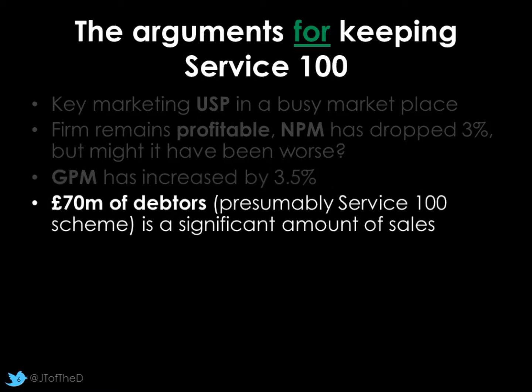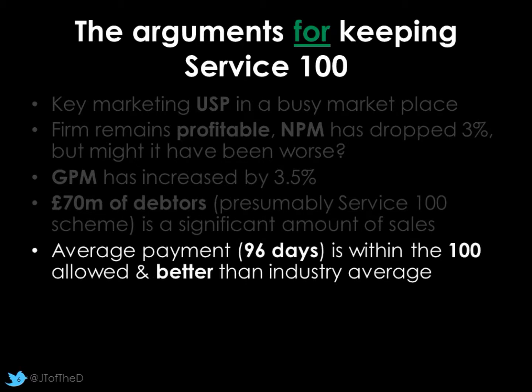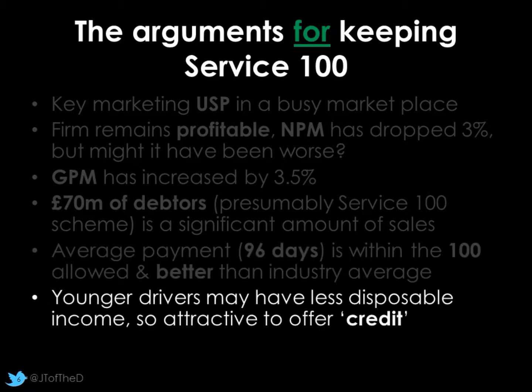We've got £70 million worth of debtors — a significant amount of sales, which we can assume is all Service 100. It's working: people are taking advantage. If we stopped the service tomorrow, would we lose that £70 million in current sales, which could be far more over the course of a year? Average payment is currently 96 days, within the 100-day limit — credit control with customers is not an issue, and it's better than the industry average. Younger drivers with less disposable income are also less likely to be offered credit elsewhere, so as a marketing USP this seems very promising and is helping generate sales.